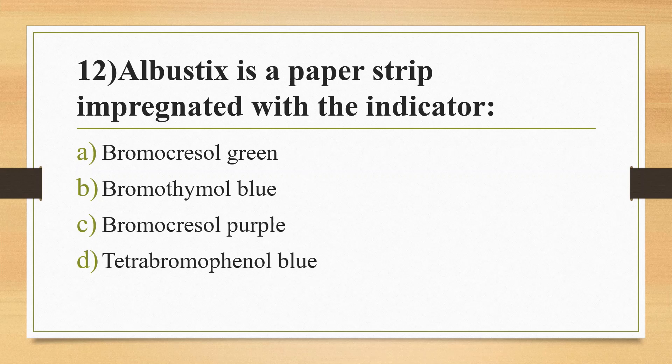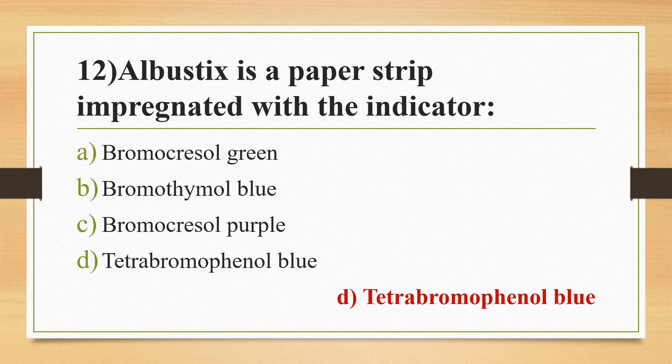Question 12: Albustix is a paper strip impregnated with the indicator — Option A: Bromocresol Green. Option B: Bromothymol Blue. Option C: Bromocresol Purple. Option D: Tetrabromophenol Blue. Albustix is a reagent strip for urine analysis used for detecting protein in urine. Answer is Option D, Tetrabromophenol Blue.